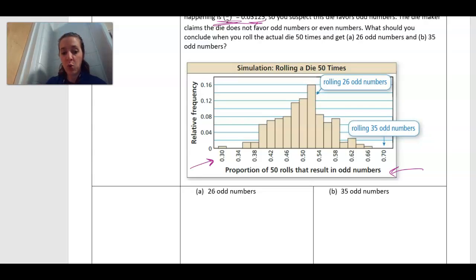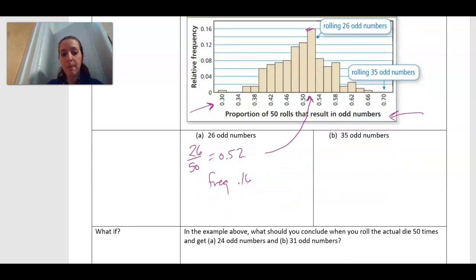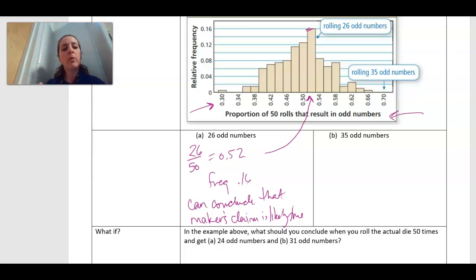Okay, so now let's look: to get 26 odd numbers I would have 26 divided by 50 which gives me that proportion of 0.52, which I can see in my graph is right there. So I can see that my frequency for that one is at 0.16, so my frequency is at 0.16, which is the highest peak in that simulation. So I would conclude that the maker's claim is likely true. Okay, because that did happen a lot if I get 26 odd numbers. When we're dealing with these hypotheses, we're always going to say that the claim is likely true or likely false. We can never say for sure it's true or false. We're just using our data and our information to say if it's likely true or likely false.